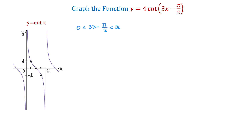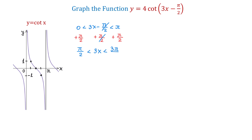To solve this inequality for x, first we will add pi over 2 to all three parts. To the left, 0 plus pi over 2 is pi over 2. In the middle, negative pi over 2 and positive pi over 2 will cancel and we will get 3x. And to the right, pi plus pi over 2 is 3 pi over 2.